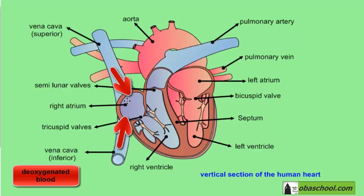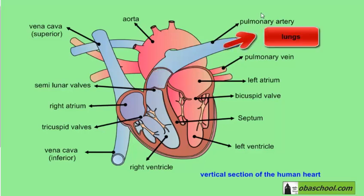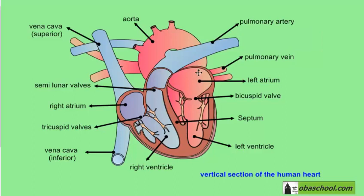The right atrium of the heart fills with deoxygenated blood. The tricuspid valve at this point is closed. For this blood to pass through the tricuspid valve, the right atrium must contract — so the right atrium contracts, the tricuspid valve opens, and blood is now in the right ventricle. Then the right ventricle contracts, the semilunar valve opens, and this blood passes through the pulmonary artery to the lungs.